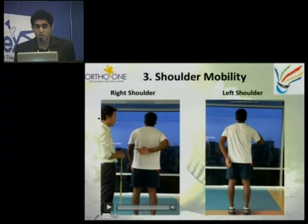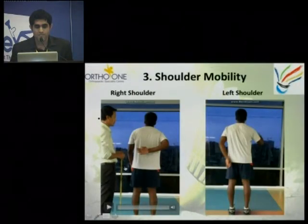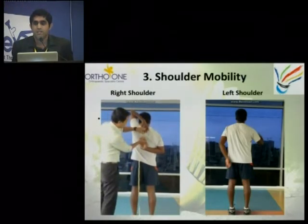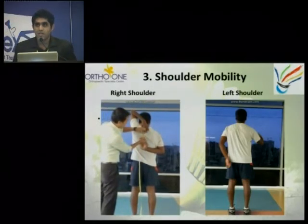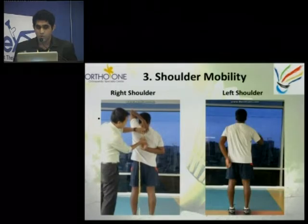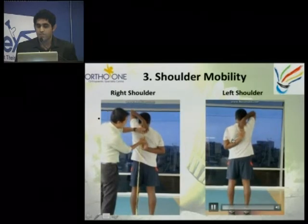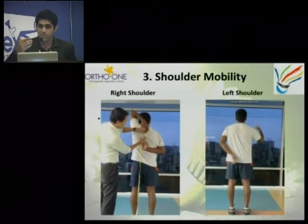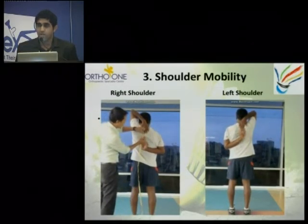The third component is shoulder mobility. I would like all of you to check your shoulder mobility now — try to touch both shoulders together and see if you can grab your hands. Do it on both the right and left sides. There are a lot of athletes who are right-dominant or left-dominant, and the dominant hand usually has a lot of variation. As you can see, the athlete can easily grab both hands on the left shoulder, which indicates the right shoulder has some kind of problem that needs to be corrected with corrective exercises.